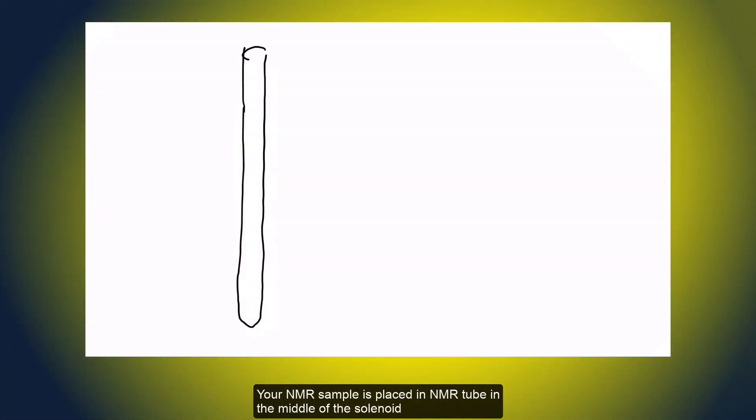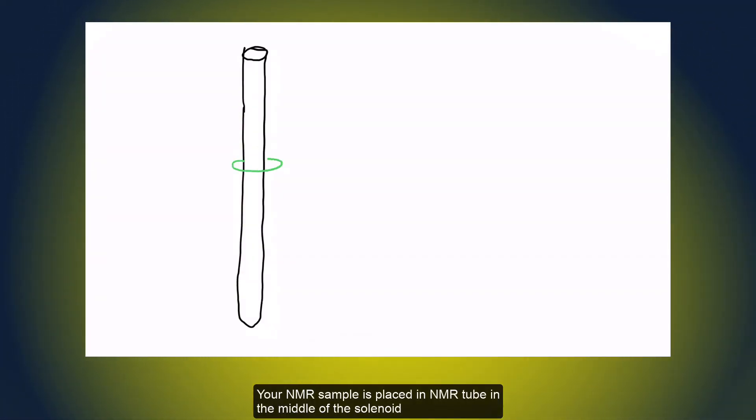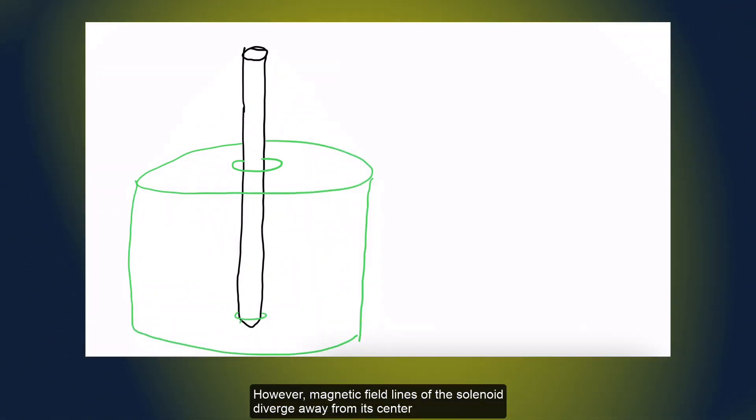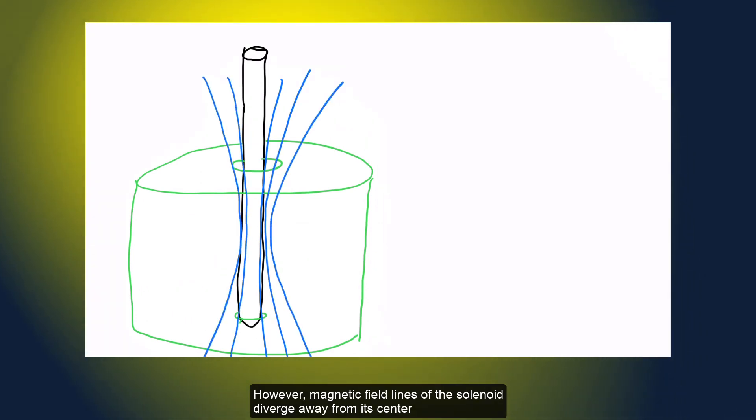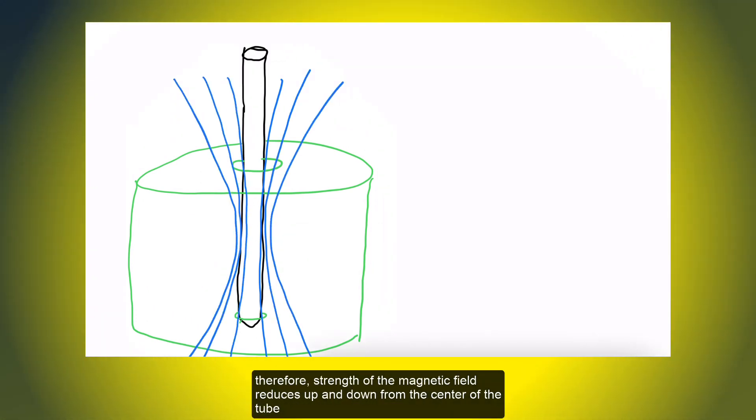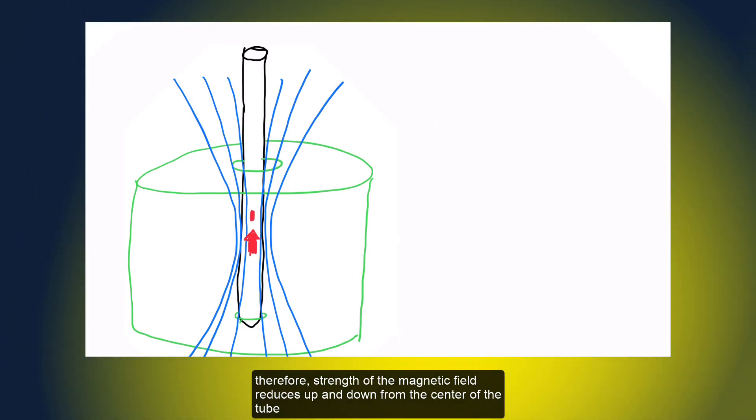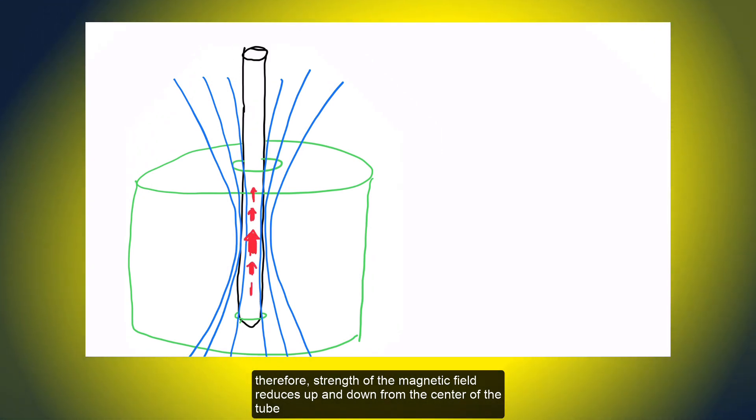Your NMR sample is placed in NMR tube in the middle of the solenoid, where the magnetic field is strongest. However, magnetic field lines of the solenoid diverge away from its center. Therefore, strength of the magnetic field reduces up and down from the center of the tube.